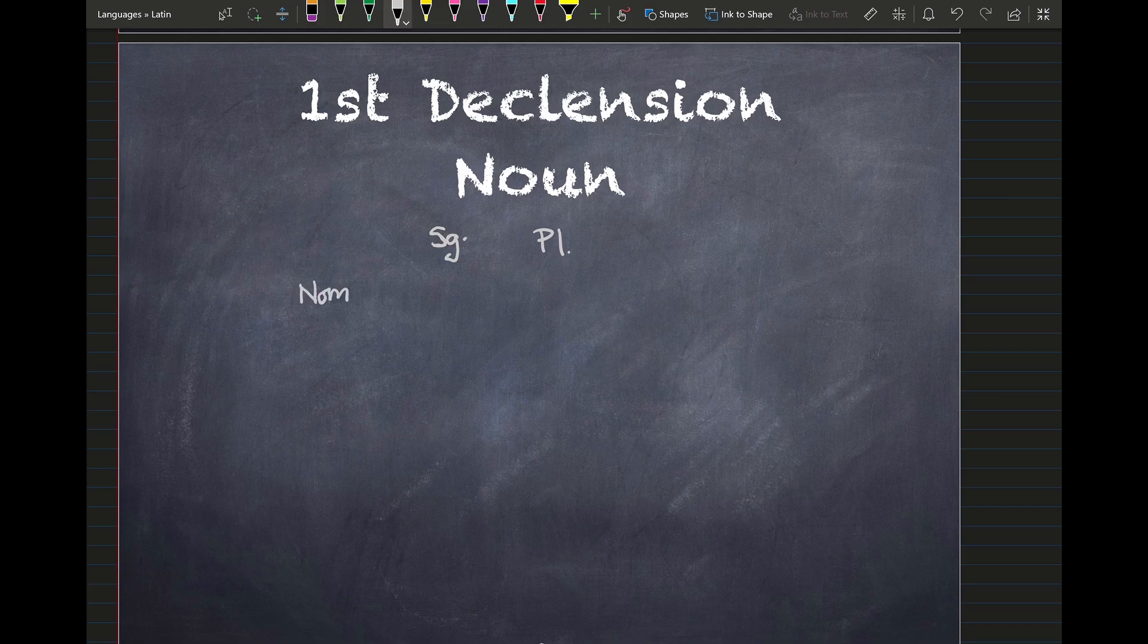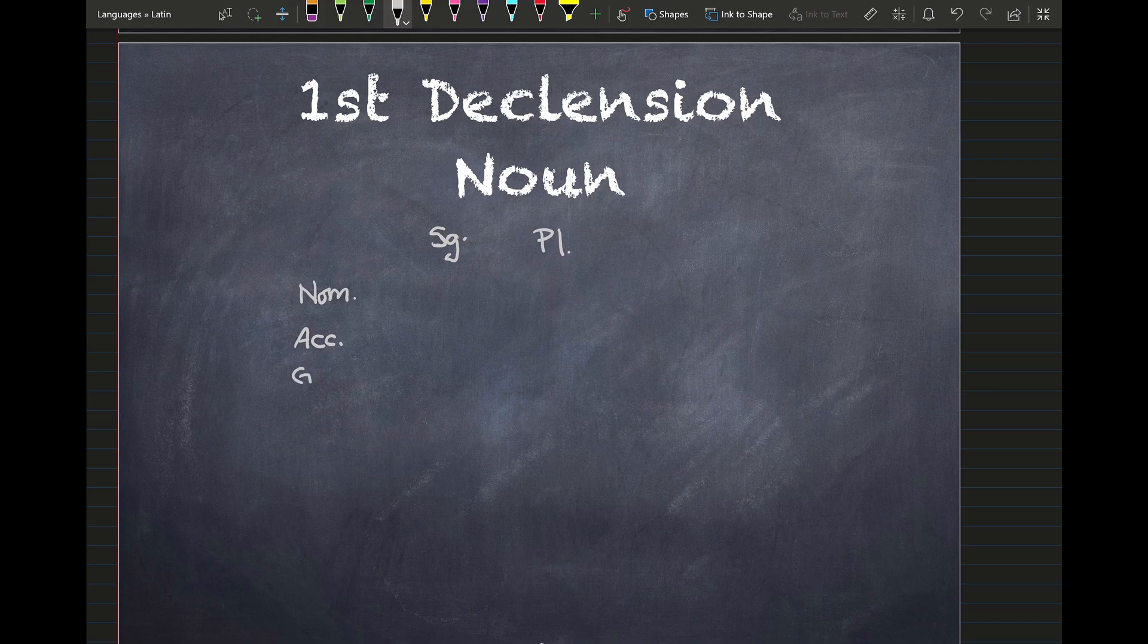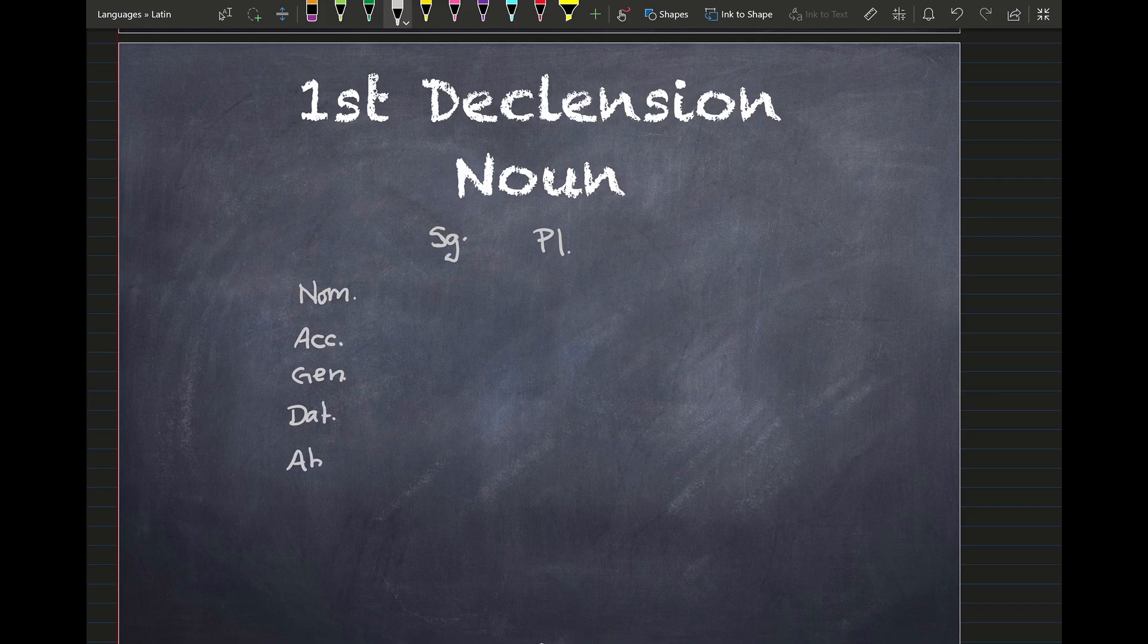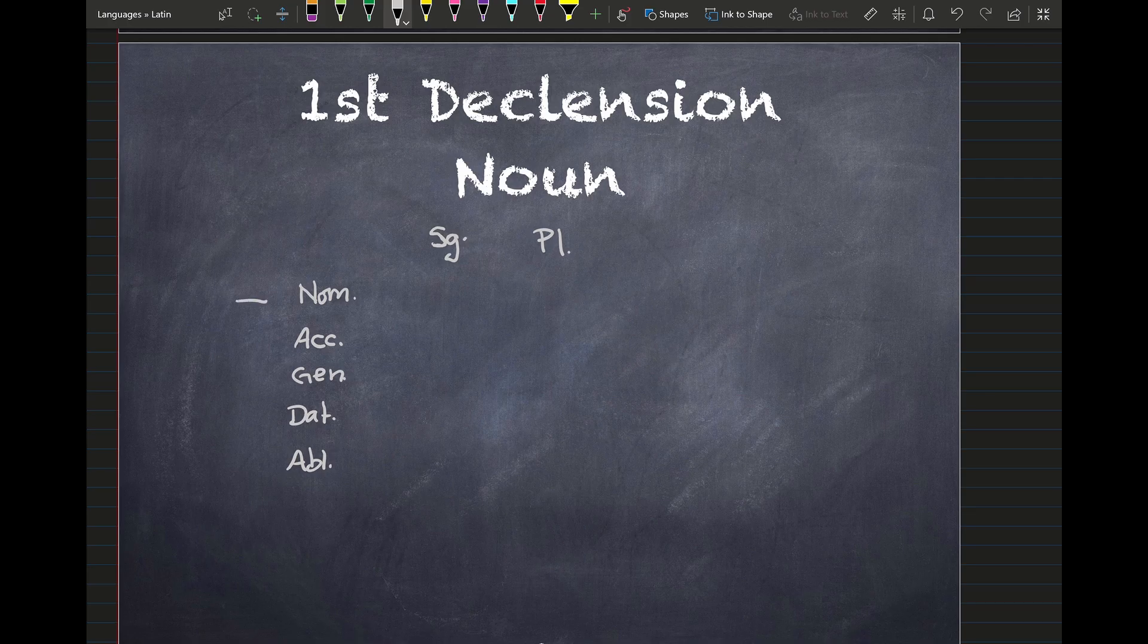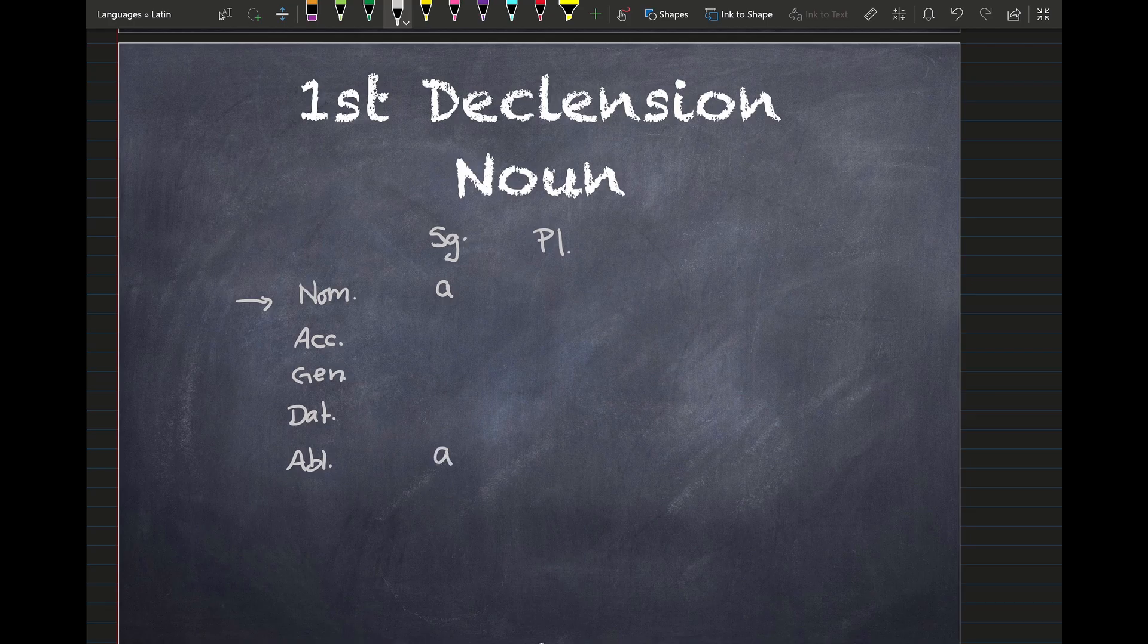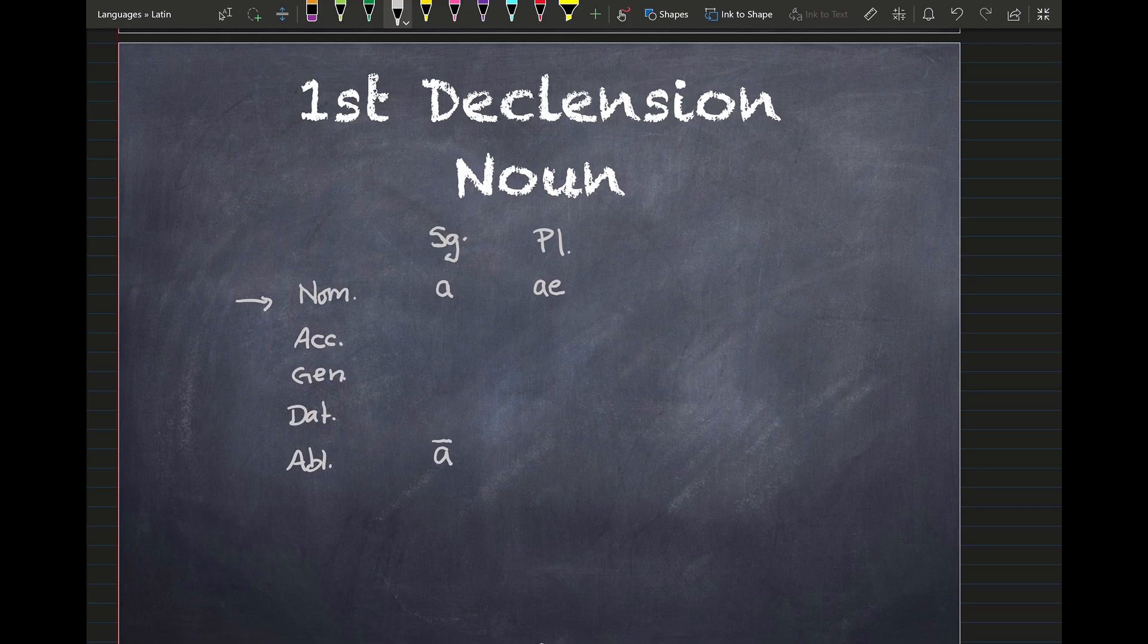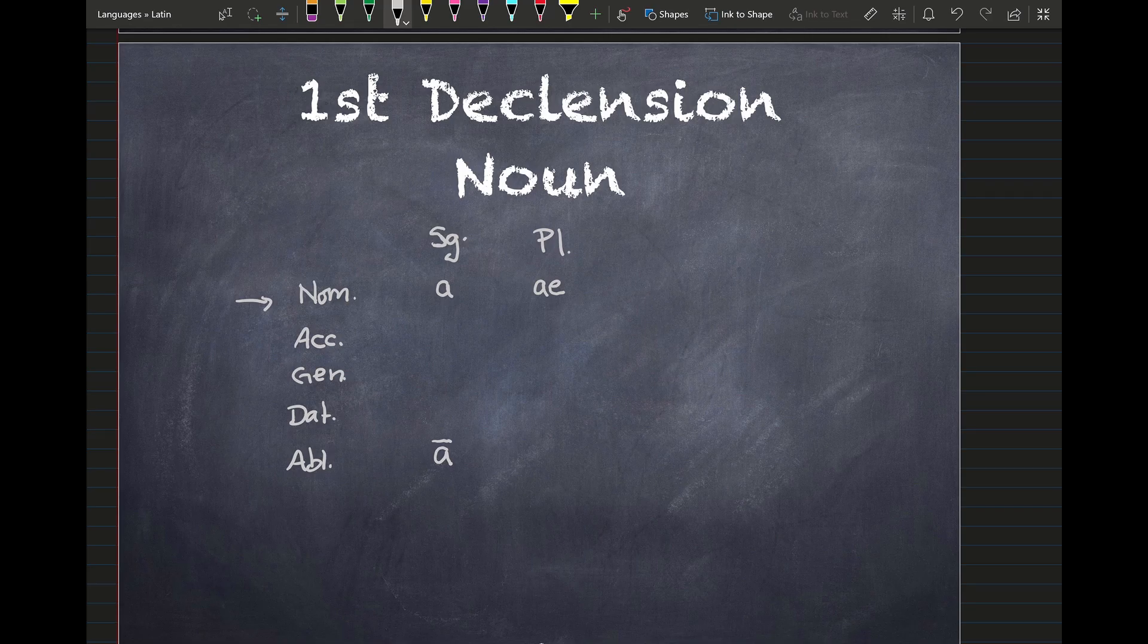Off to the side here, I'm going to write my abbreviations for the cases. Remember, I'm just getting you in the habit of seeing what it's going to look like as we go through these chapters. We'll keep adding to our cases. But right now, we're just going to focus on the ones that we're dealing with. So in the nominative, if you'll recall, we've always seen an A on a first declension noun in the nominative singular. And the ablative singular, we have seen an A with a macron over the top of it.